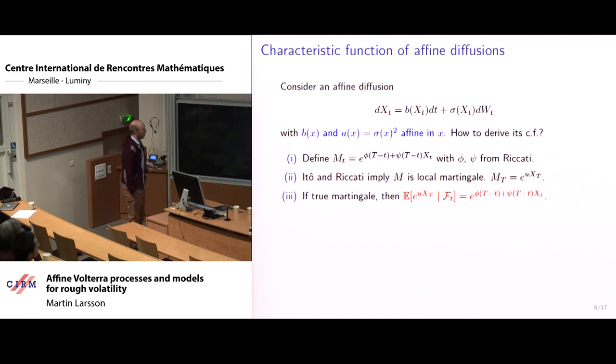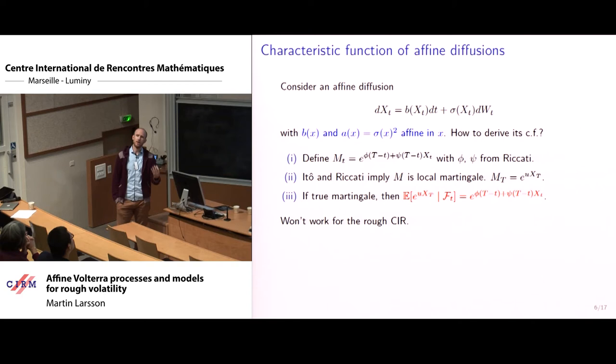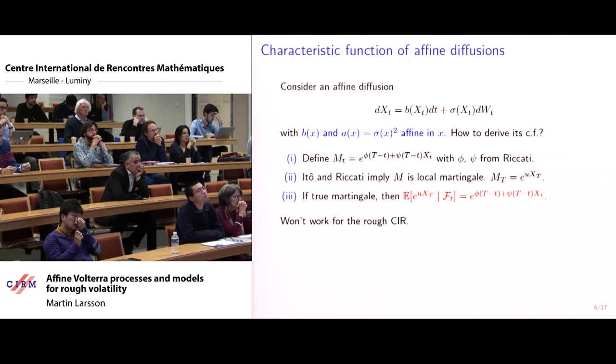And then also perhaps consider more general specifications. So then we went back to how you usually do this for standard affine diffusions. How do you get the characteristic function of a standard affine diffusion? So let's just have a quick look at how that works. This is supposed to be an affine diffusion. That means that B depends in an affine way on X, and sigma squared also depends in an affine way on X. The way to compute this characteristic function is through three steps. First of all, you define a process M by this formula where phi and c come from the Riccati equations. You apply Ito's formula here and you use that phi and c satisfy the Riccati equations to see that this M is actually a local martingale.